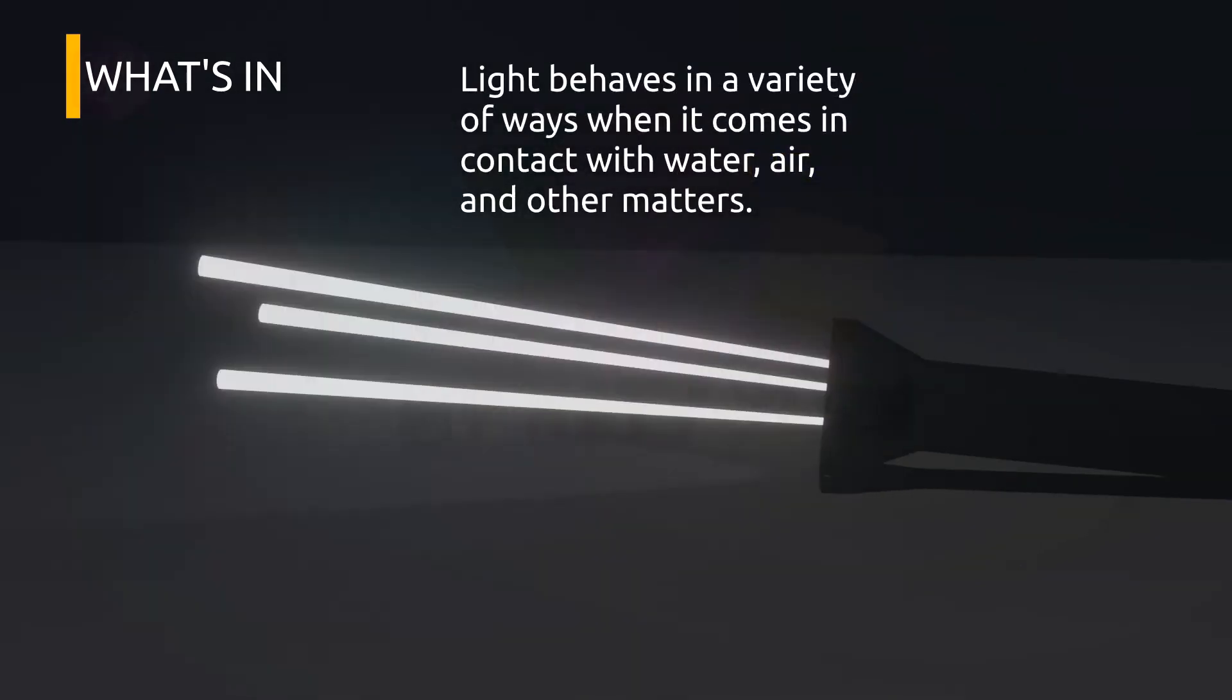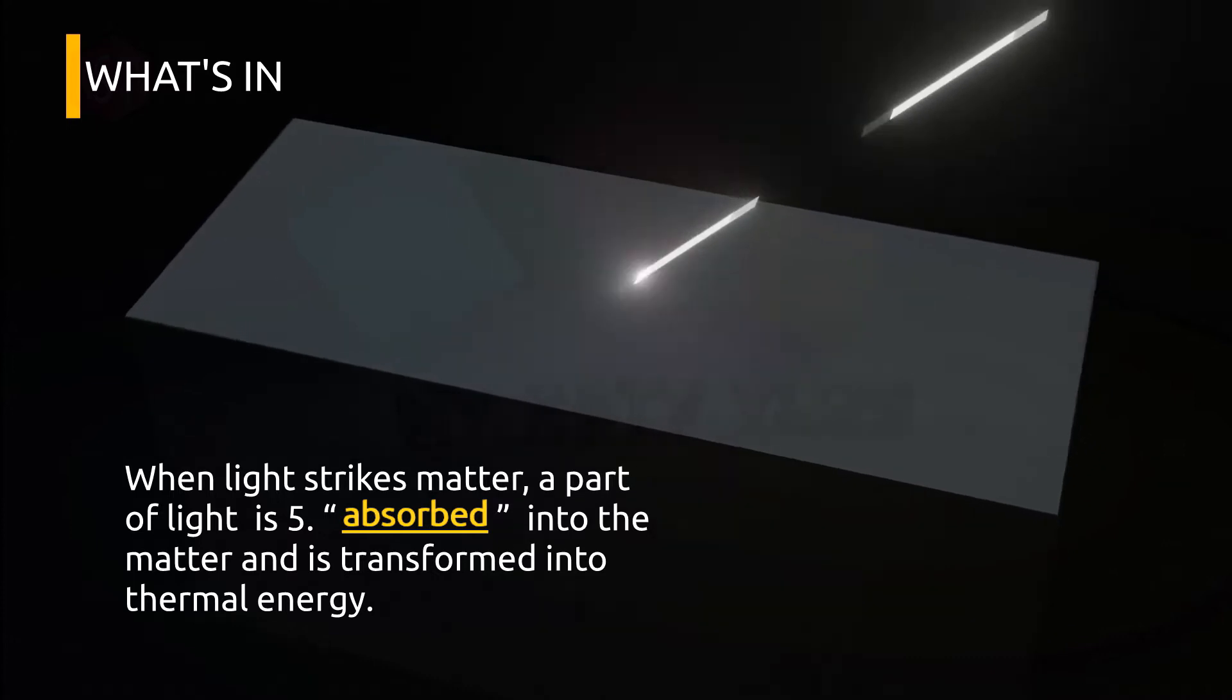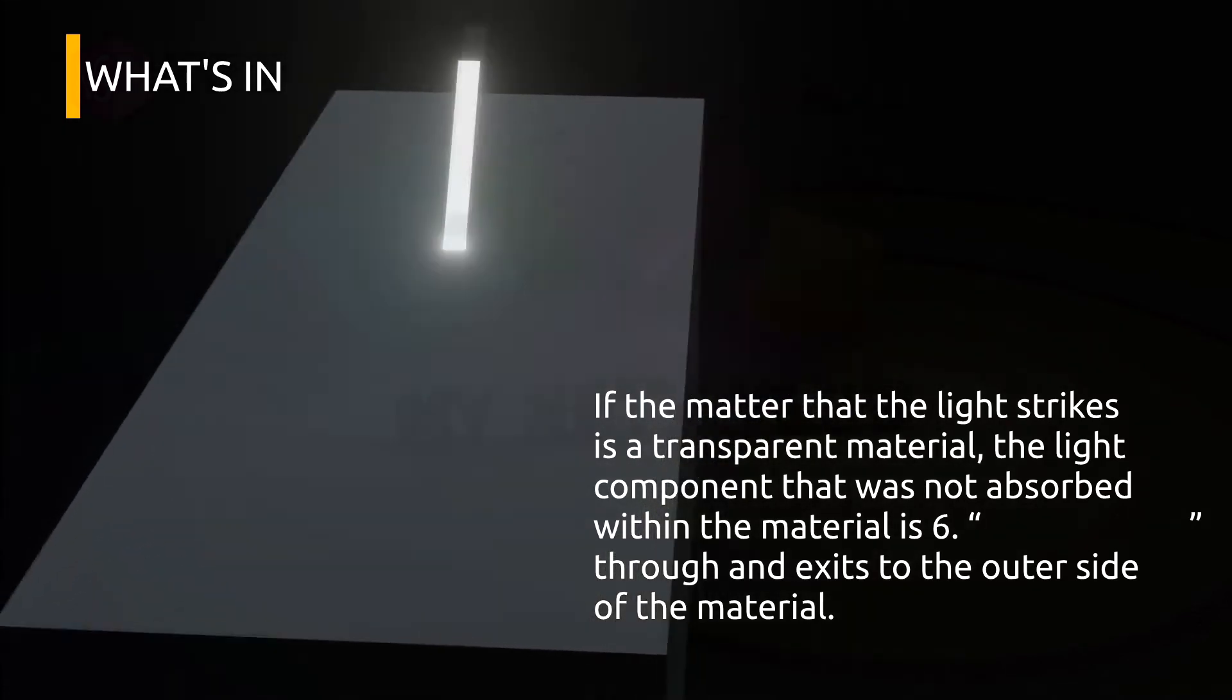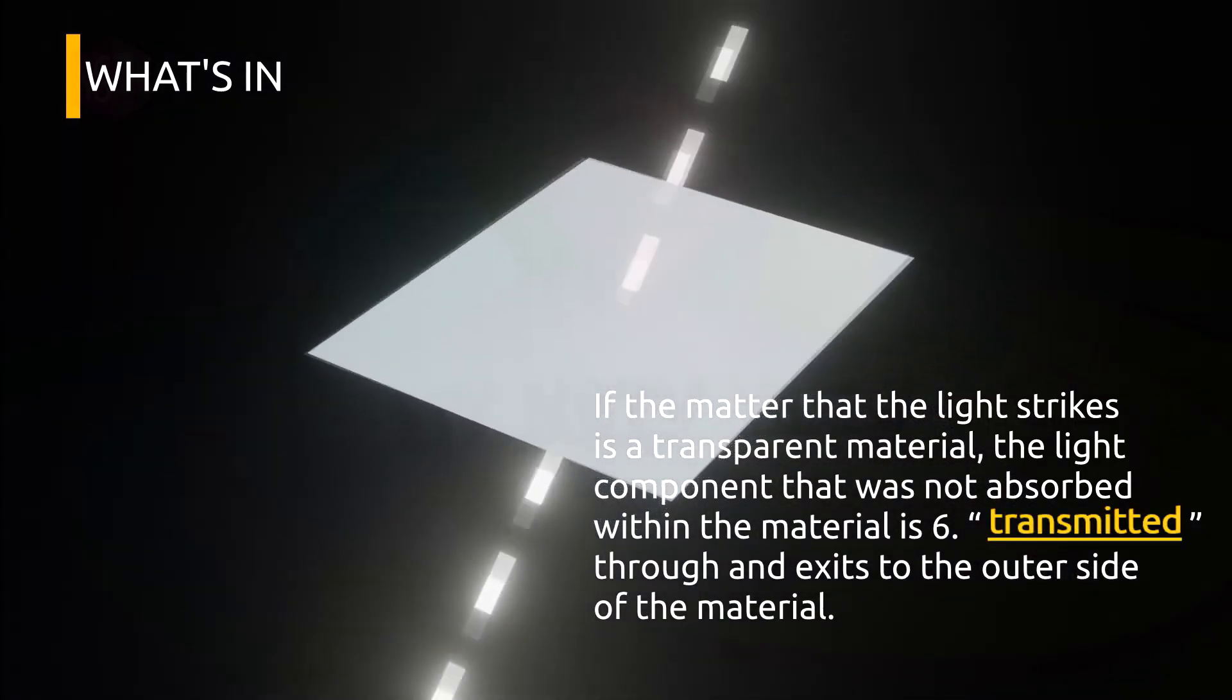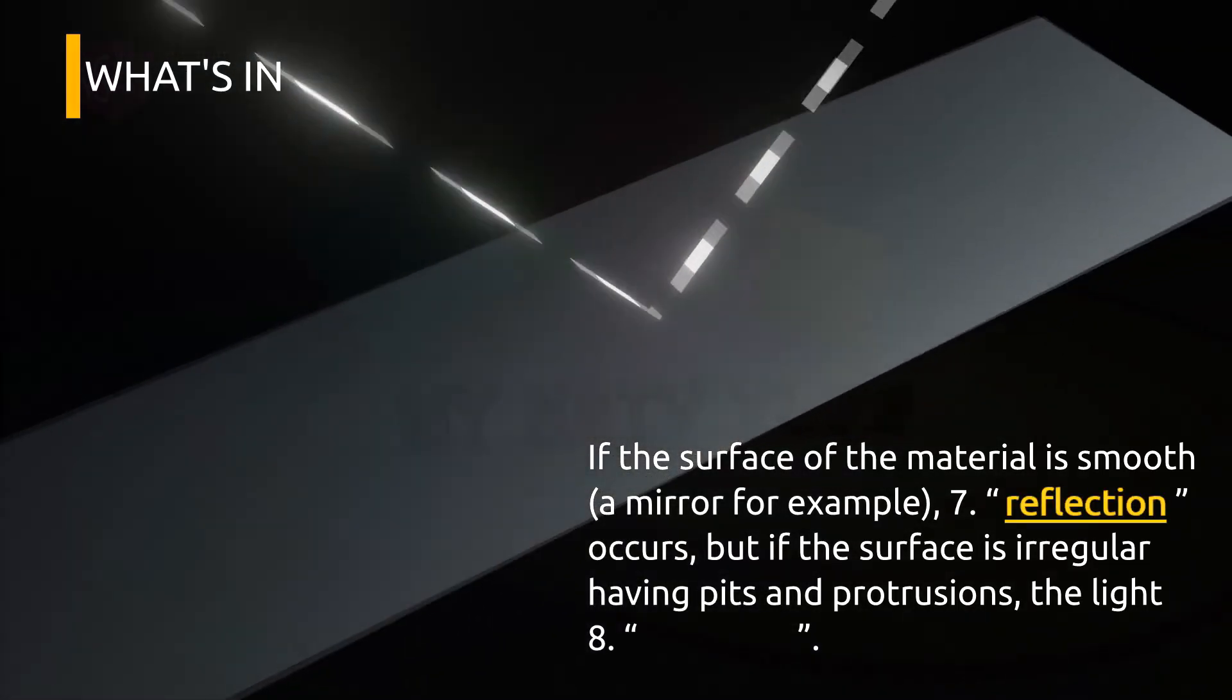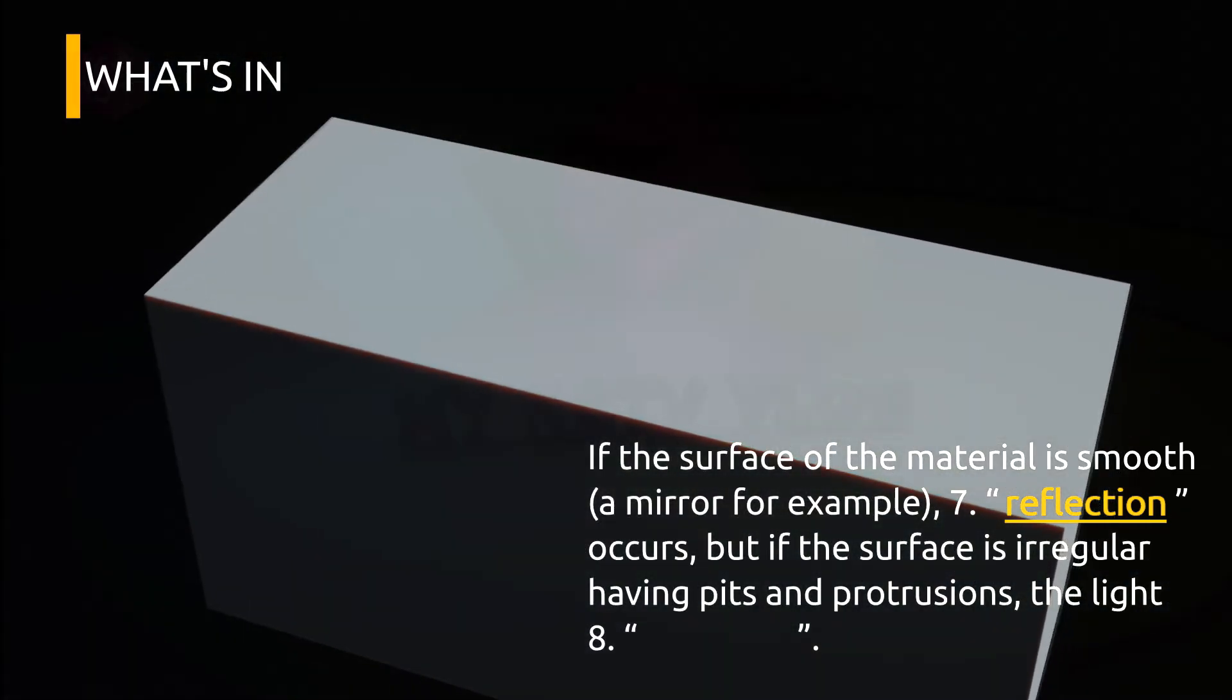Light behaves in a variety of ways when it comes in contact with water, air, and other matter. When light strikes matter, a part of light is absorbed into the matter and is transformed into thermal energy. If the matter that the light strikes is a transparent material, the light component that was not absorbed within the material is transmitted through and exits to the other side of the material. If the surface of the material is smooth, just like a mirror, reflection occurs. But if the surface is irregular, having pits and protrusions, the light scatters.